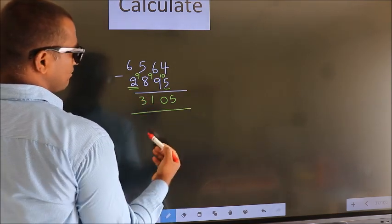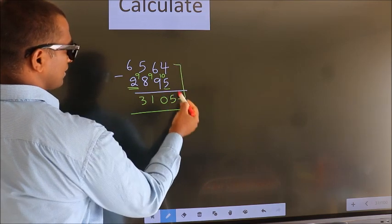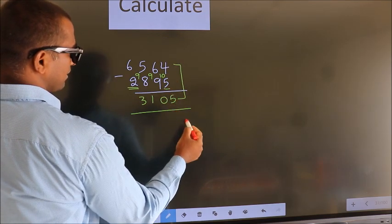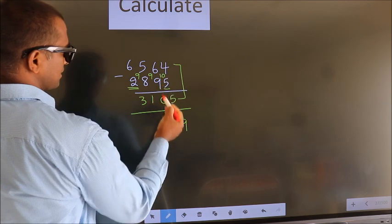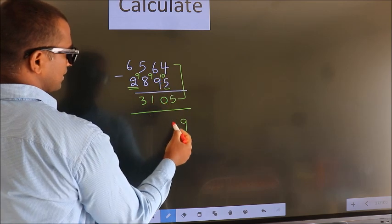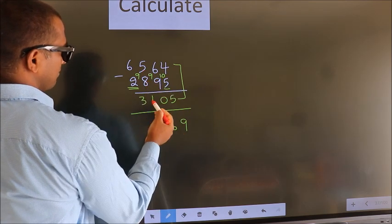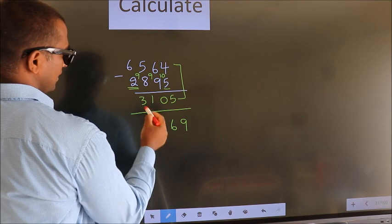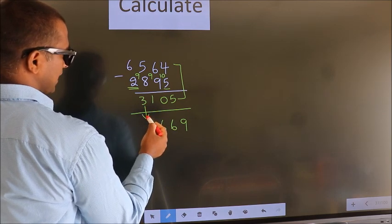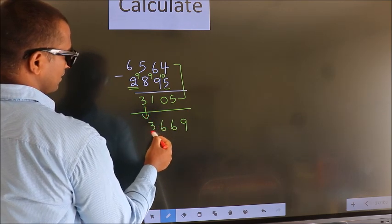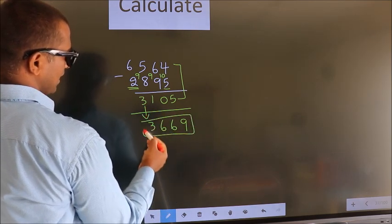Now add these 2. 4 plus 5 is 9. 6 plus 0 is 6. 5 plus 1 is 6. First digit as it is, you write it down. So this is our answer.